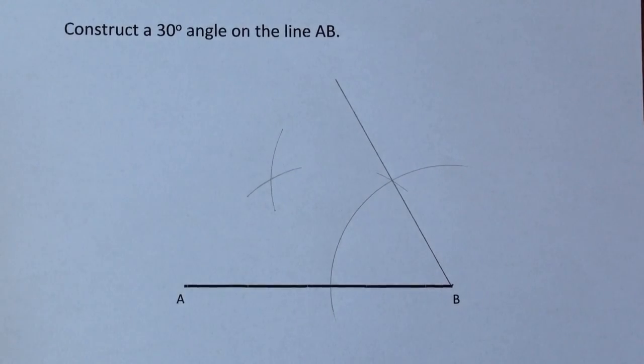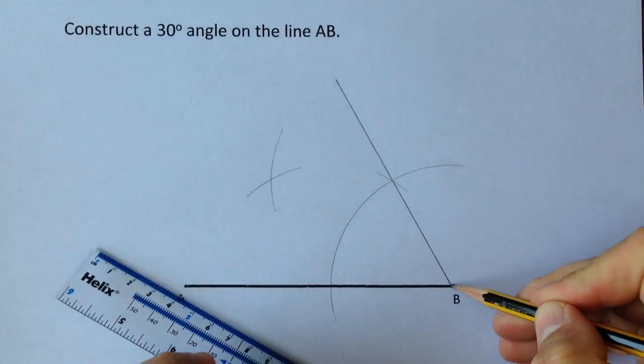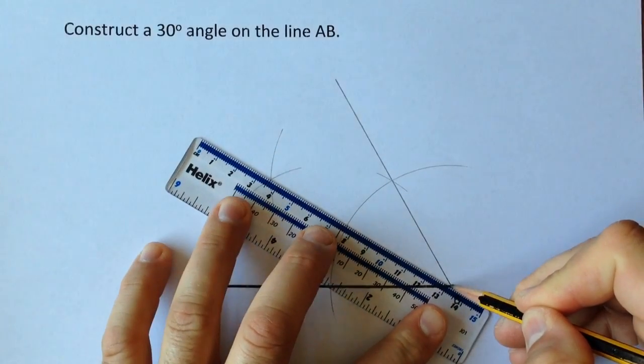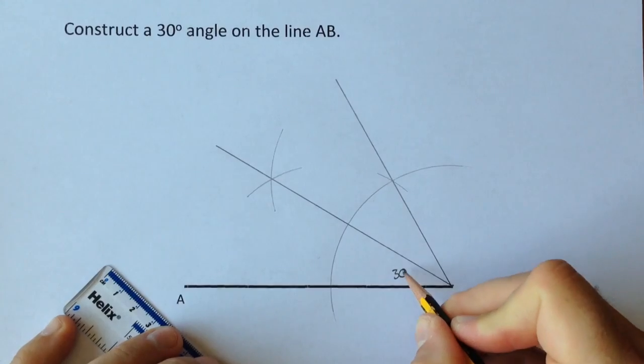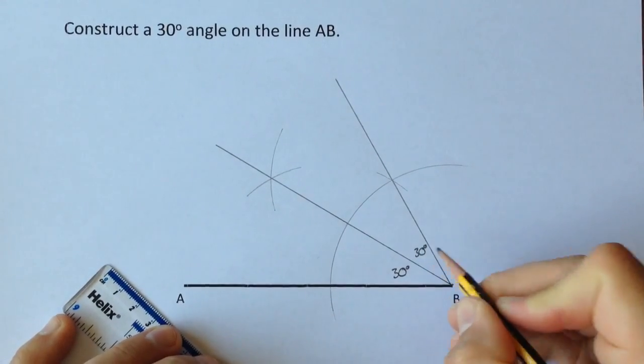Now if you join where those two arcs meet back to B you will have constructed a 30 degree angle here and a 30 degree angle there.